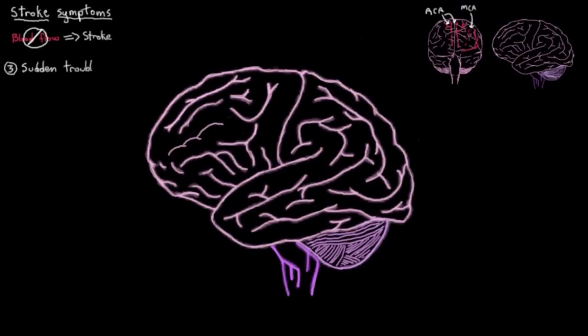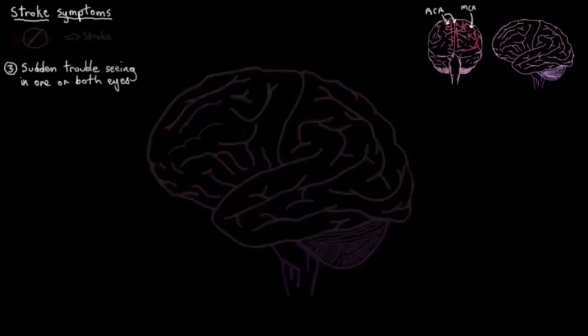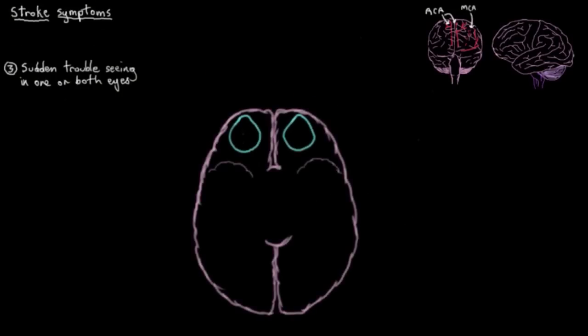So next up we have sudden trouble seeing in one or both eyes. And here's a top down view of the brain to help us understand this. And so up here is the front and back here is the back. And this is the left eye and this is the right eye.